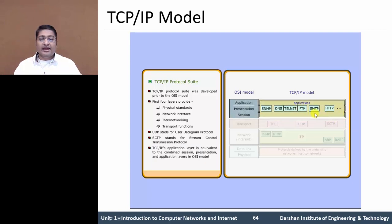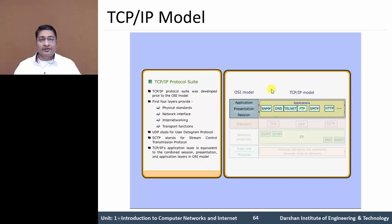Next is the Application Layer in the TCP/IP model, which is equivalent to the Application Layer, Presentation Layer, and Session Layer in the OSI model. It supports a few protocols: SNMP, DNS, Telnet, FTP, SMTP, and HTTP. We will learn all these protocols in upcoming videos.